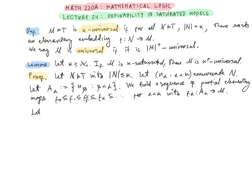Such that F_α is a partial elementary map from the set A_α to M. We let F_0 be the empty map. If α is a limit ordinal, we take F_α to be the union of F_β for β less than α, which by the inductive assumption will be partial elementary as a union of an increasing chain of partial elementary maps.